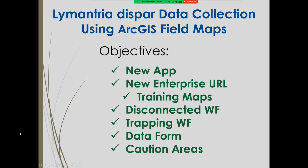So what are we going to talk about today? We're going to talk about this new Field Maps app. We're going to talk about a new enterprise URL that we are using this year — the enterprise site moved, so it's really about typing in the correct URL. Training maps now live in a stage environment, so we're talking about being in the right portal. We're going to review the disconnected workflow, talk about some basic trapping workflow more specific to Gypsy Moth, look at the data form on the iPad, and pinpoint some caution areas.